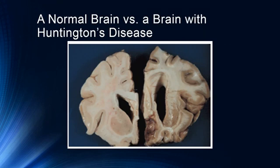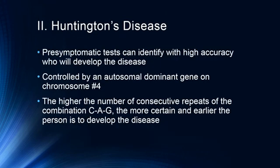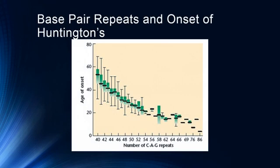Brain imaging shows massive decimation of the brain in Huntington's disease, particularly in the thalamus and related areas. Pre-symptomatic tests can identify with high accuracy who might develop the disease. It is controlled by an autosomal dominant gene on chromosome number four — the higher the number of consecutive CAG repeats, the more certain and earlier the person is to develop the disease, something genetic testing can determine.